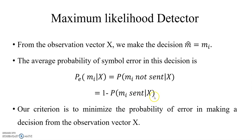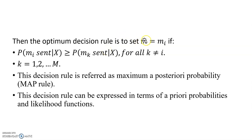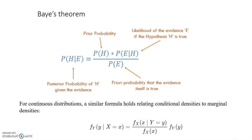Error means the decision was in favor of m_i but m_i was not actually sent. This equals 1 − P(m_i sent | x). To minimize this error, we must maximize P(m_i sent | x). So the decision rule becomes: m̂ = m_i if P(m_i sent | x) ≥ P(m_k sent | x) for all k ≠ i. This is the a posteriori probability, known as the Maximum A Posteriori (MAP) rule. We can convert this using the prior probability and likelihood function.